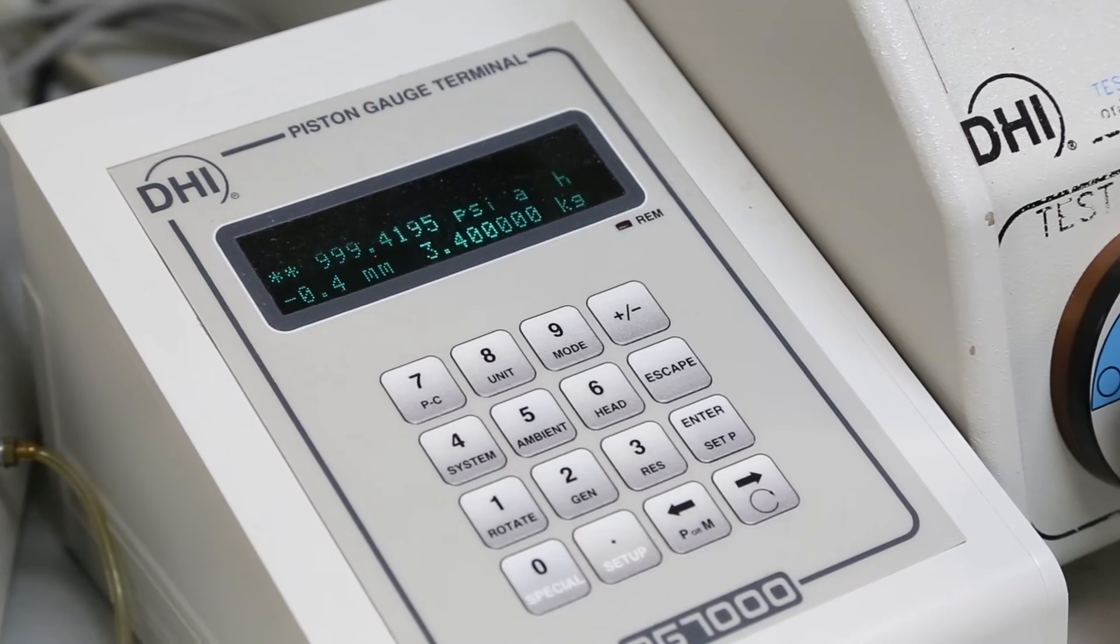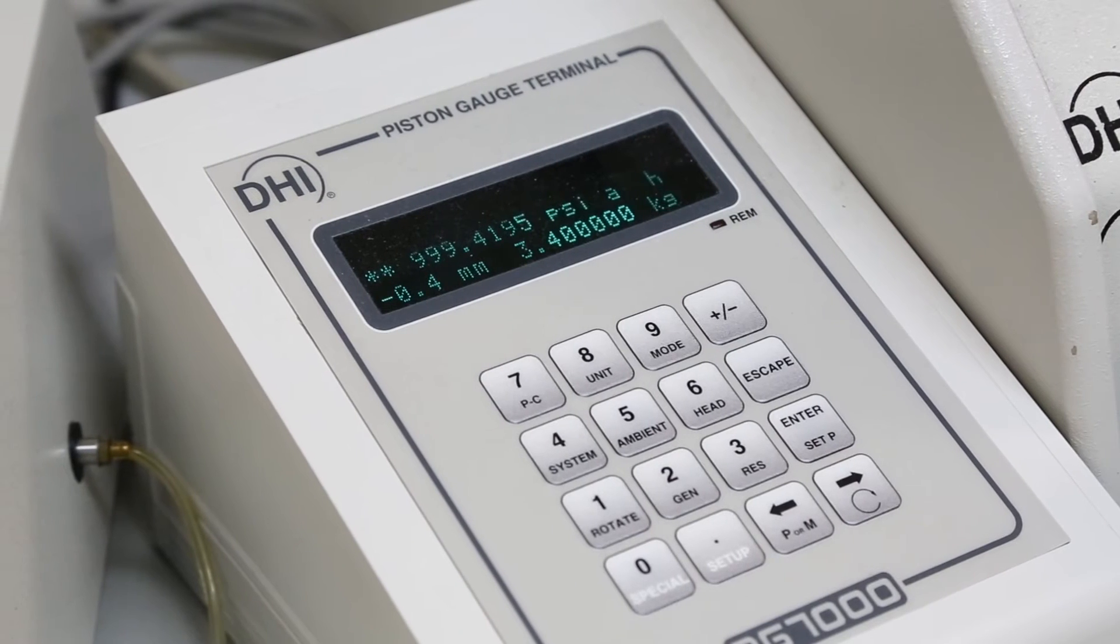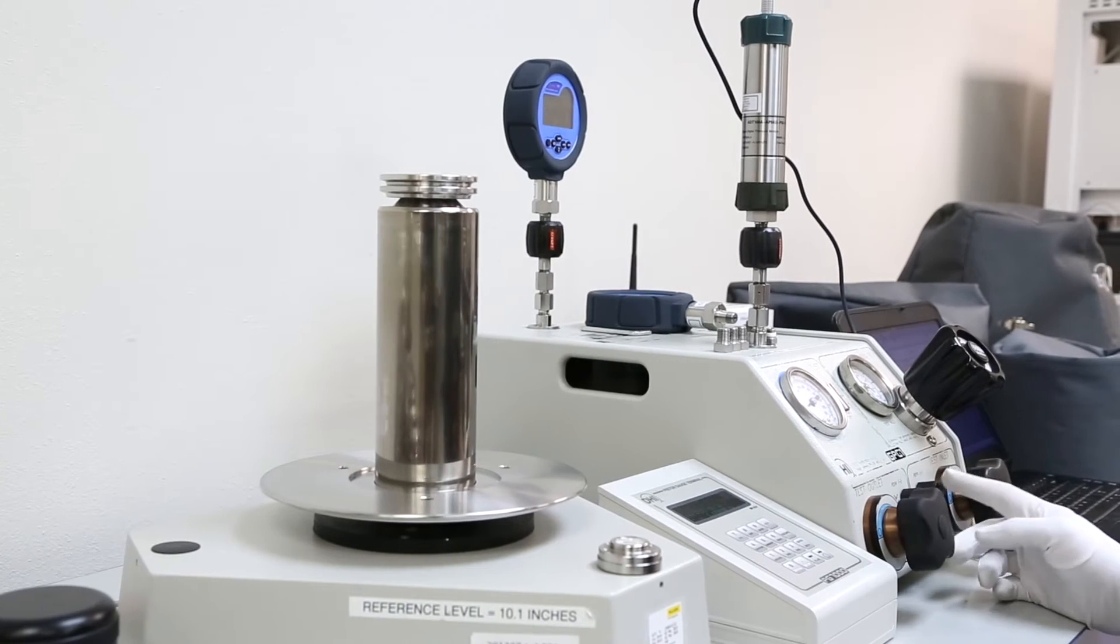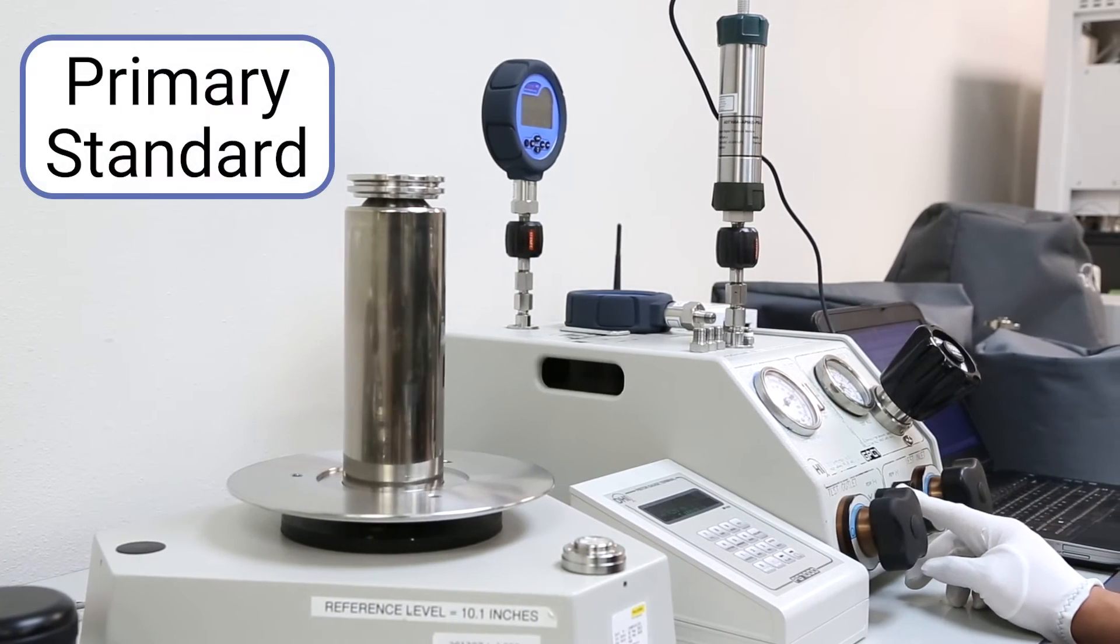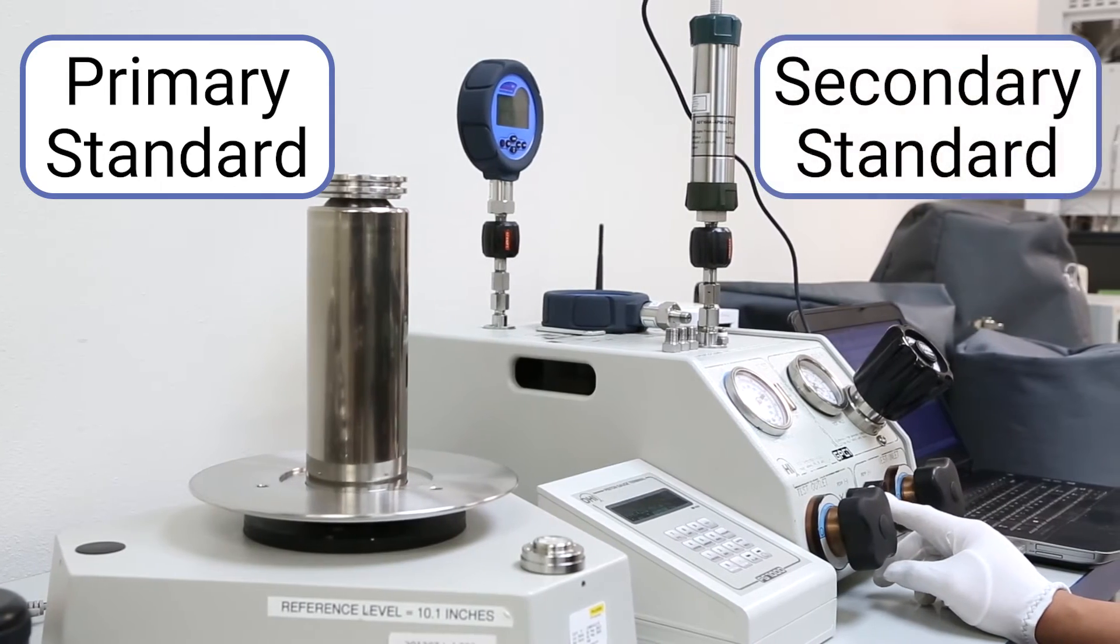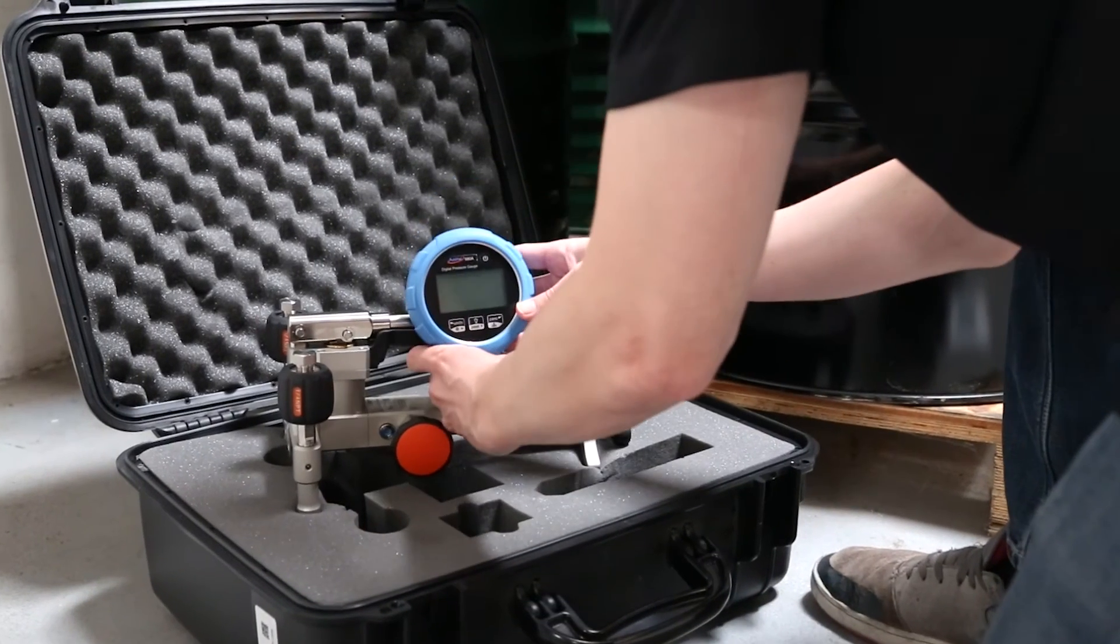This high accuracy is what designates them as a primary standard. Primary standards are used to calibrate secondary standards, for example a pressure gauge that will be used as a reference in the field.